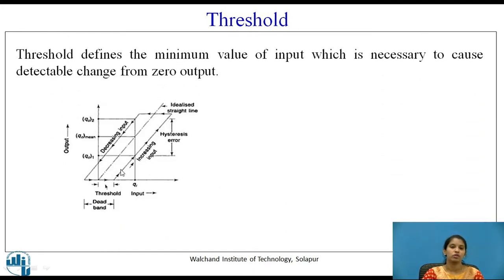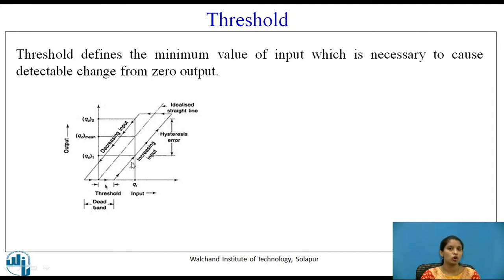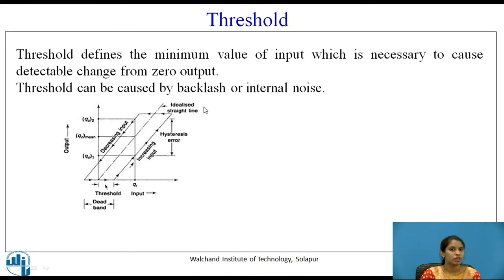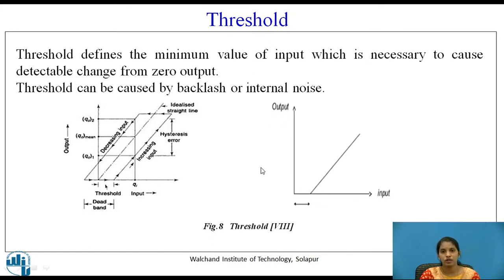Threshold defines the minimum value of input which is necessary to cause a detectable change from zero output. Threshold can be caused by backlash or internal noise. The figures shown illustrate the threshold region — a detectable change caused from zero input. In most digital systems, when power is supplied it needs to be reflected on the recorder or display system.